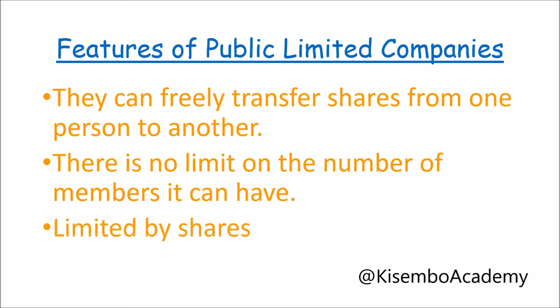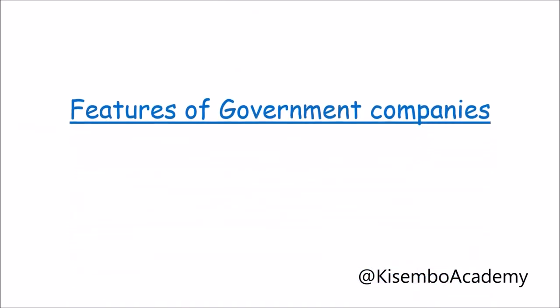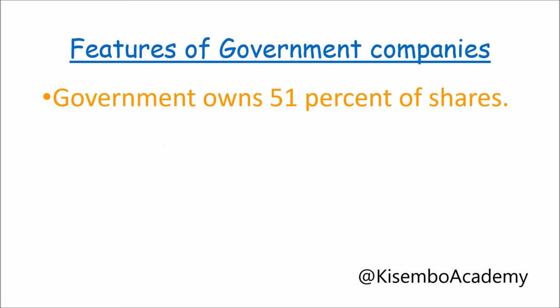A government company is established under the Companies Act as a joint ownership by the government and the private sector. Key features include that the government must own 51% of the shares, and the liabilities of such companies are limited by shares. Examples in Uganda include New Vision newspaper, where the government holds at least 51% of shares, and the Uganda Electricity Distribution Company Limited.